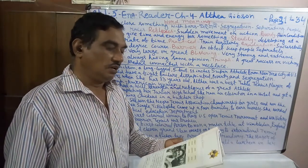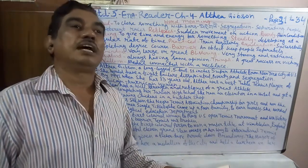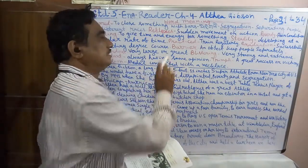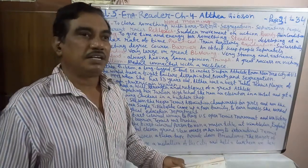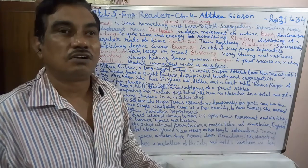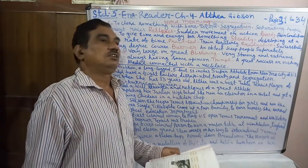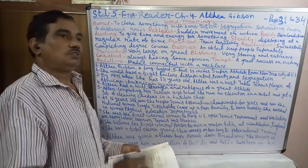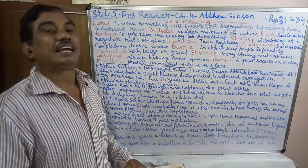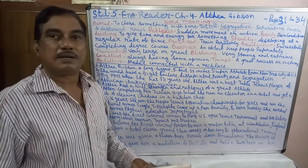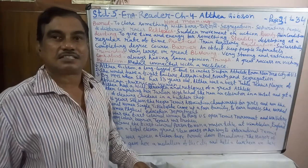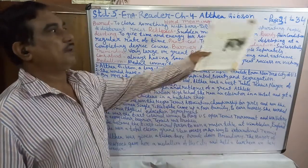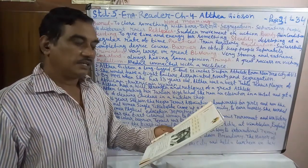'Tremendous' means very large or great. 'Blistering' means very strong and extreme. 'Consistent' means always having the same opinion or approach. 'Triumph' means a great success or victory. 'Medallion' is a metal connector worn with a necklace, that is called a medallion.